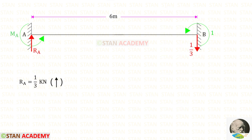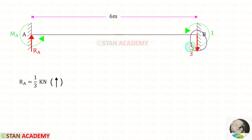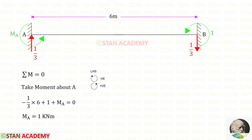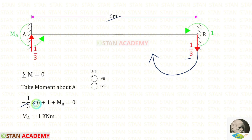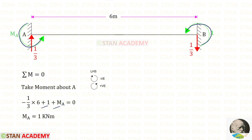Since there is no load on this beam, the vertical reactions Rb and Ra have the same magnitude but opposite directions. Since Rb acts downward, Ra acts upward. Taking moments about A from point B to find Ma, assuming Ma acts anti-clockwise: Rb acts clockwise (negative) over distance 6, while both Mb and Ma are anti-clockwise (positive). Ma comes out positive, confirming it acts in the anti-clockwise direction.